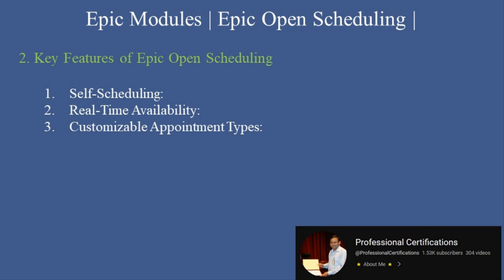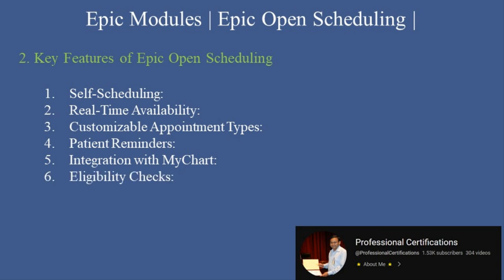3. Customizable Appointment Types: Allows organizations to define which appointment types are available for self-scheduling, such as annual check-ups or vaccine visits. 4. Patient Reminders: Sends automated appointment reminders to reduce no-shows. 5. Integration with MyChart: Seamlessly integrates with Epic's patient portal for an enhanced user experience. 6. Eligibility Checks: Ensures patients meet criteria for specific appointments, e.g., insurance verification or prior referrals.